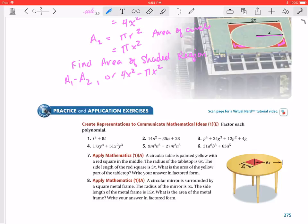Well, look, if we notice something, I notice that I have something that's similar in both. I can factor out an X squared. So then I can say 4 minus pi.